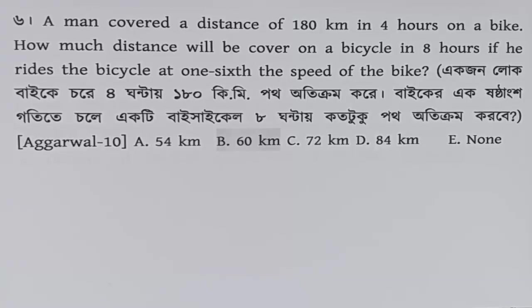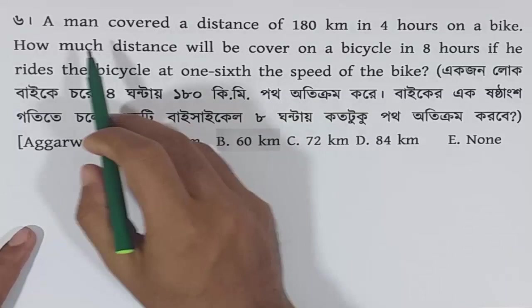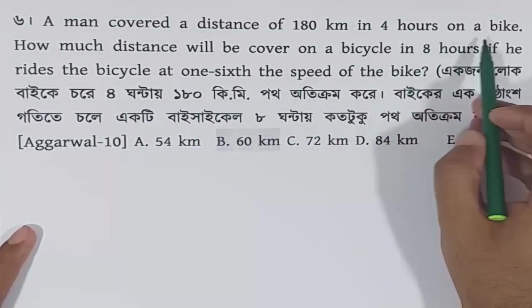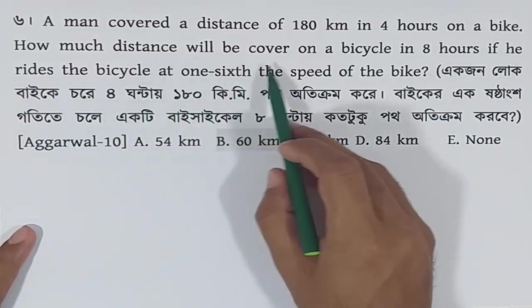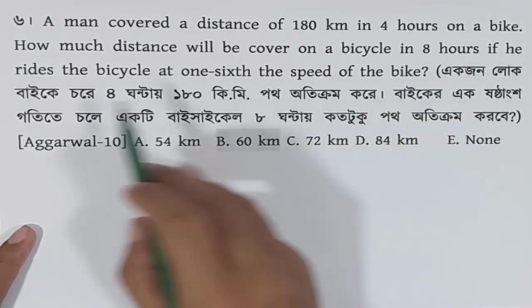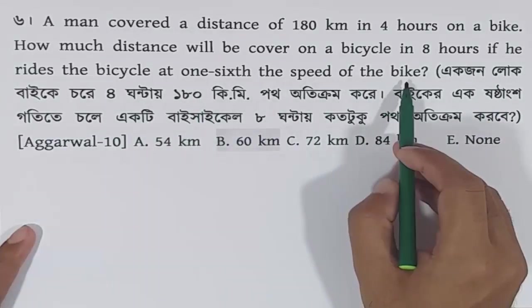Assalamualaikum. I hope everyone is well. I have done a solution for time, speed, and distance. I have already covered past questions. Now, the question is: a man covers a distance of 180 km in 4 hours on a bike. How much distance will be covered on a bicycle in 8 hours if he rides the bicycle at 1/6th the speed of the bike?